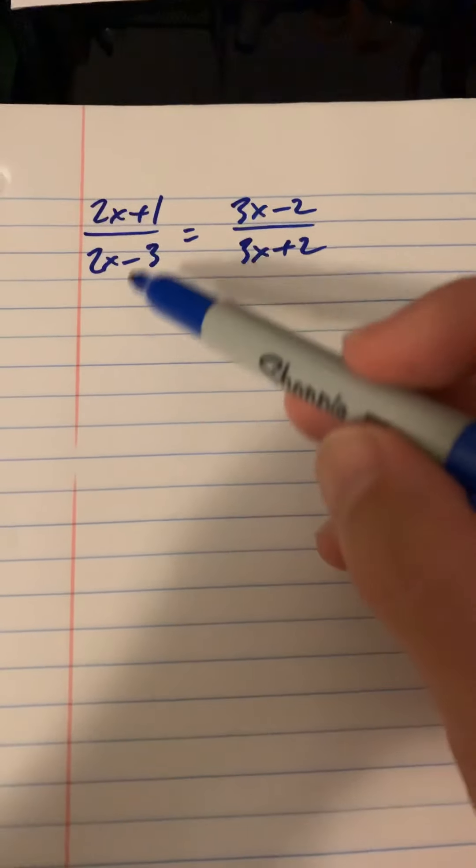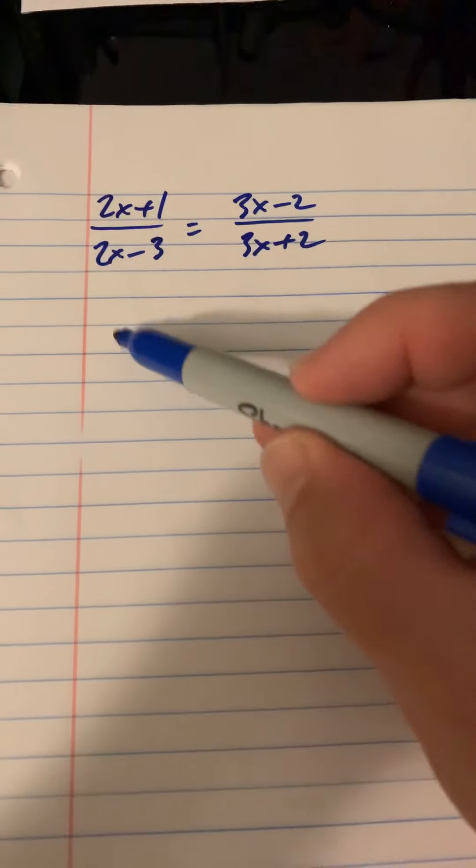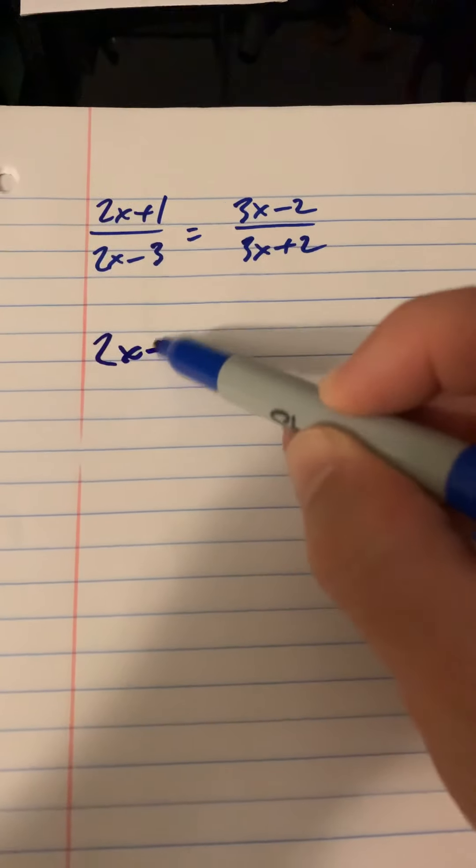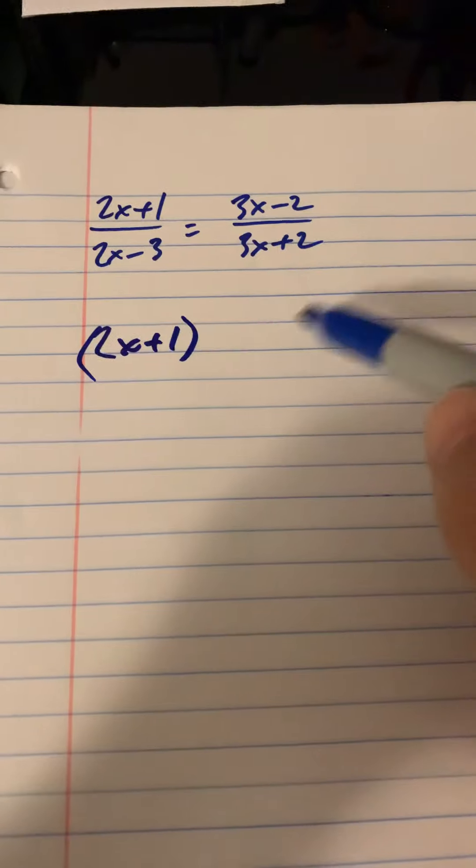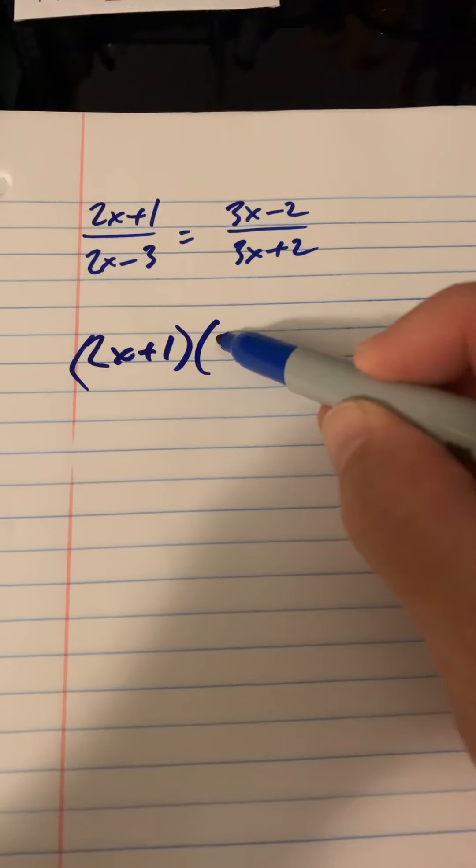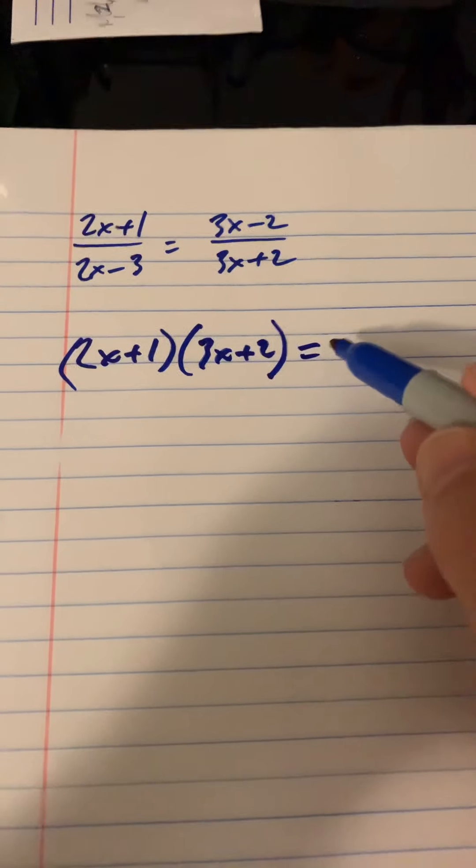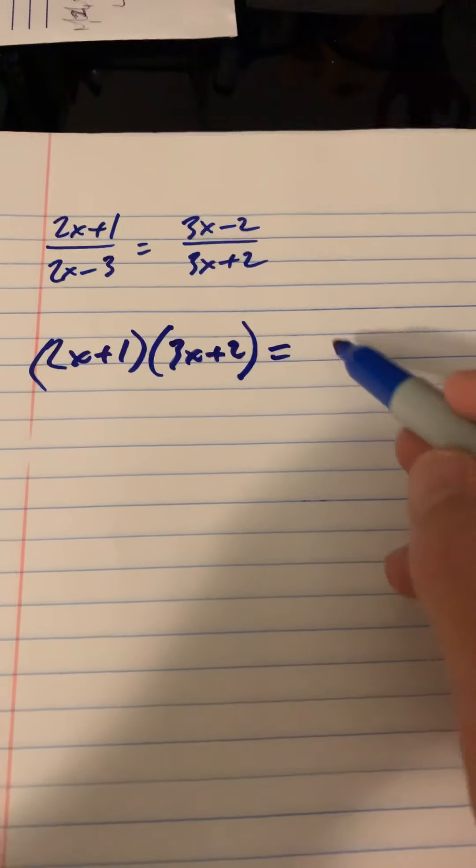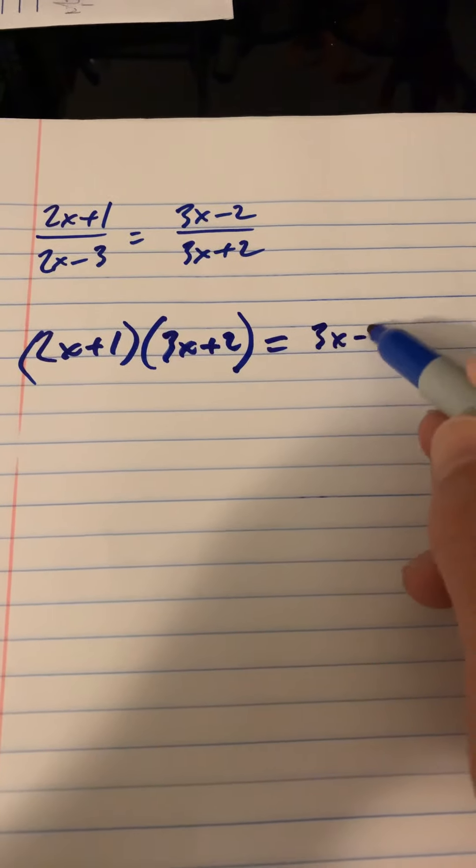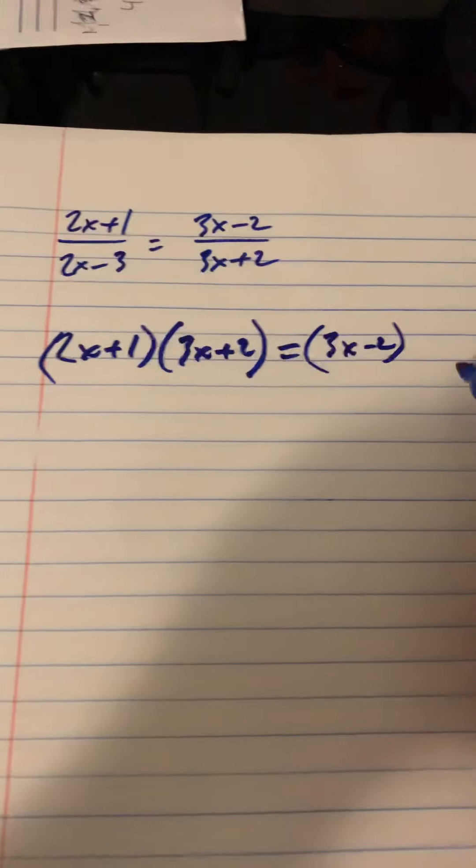Okay, so we're going to take this times this, so 2x plus 1 times 3x plus 2. We're going to set that equal to 3x minus 2 times 2x minus 3.